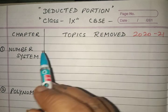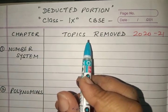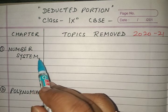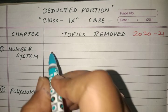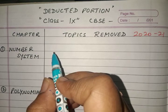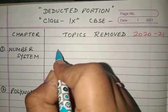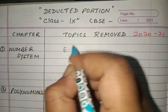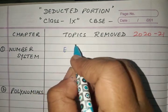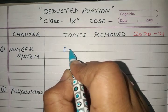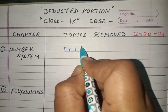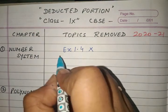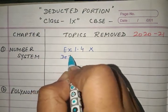The first chapter, as you know, is the Number System. In Number System, the topic they removed is representation of terminating and non-terminating recurring decimals on the number line through successive magnification. This means Exercise 1.4 is completely deleted from the first chapter.